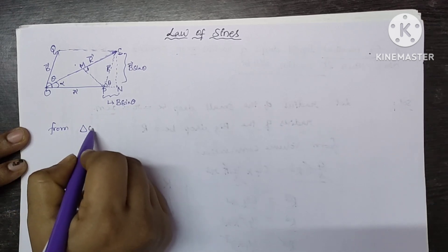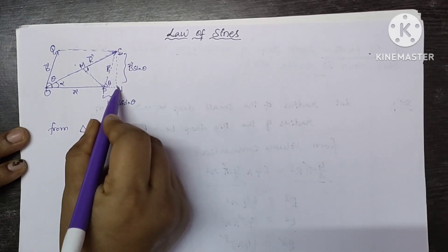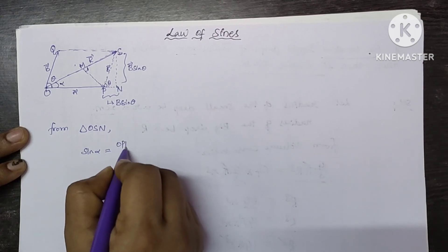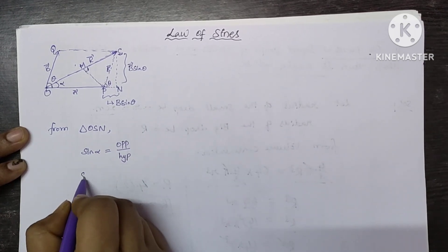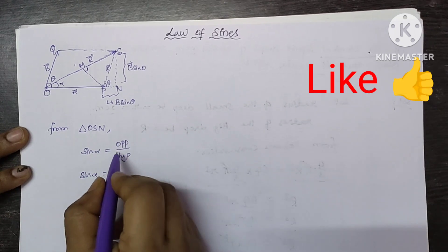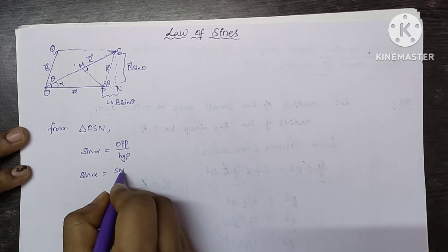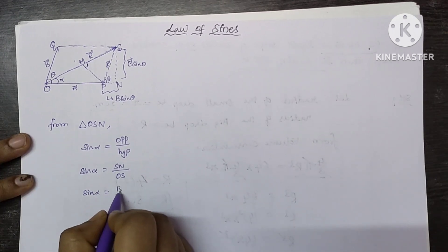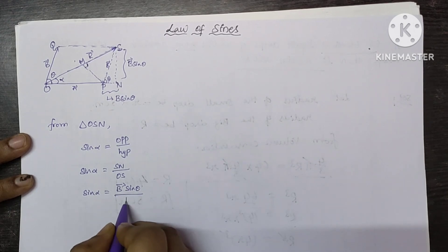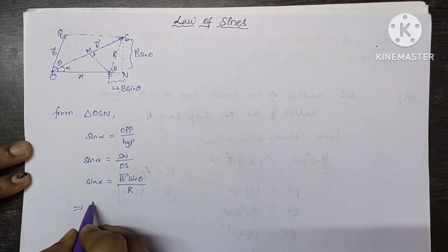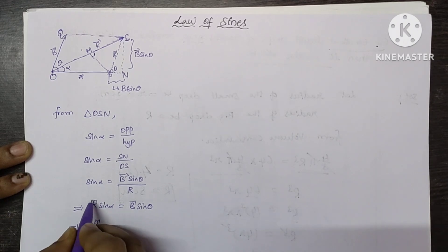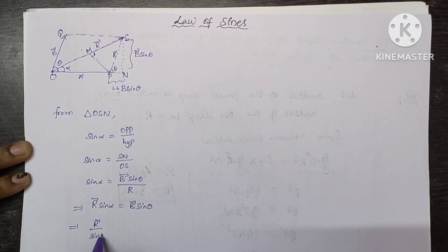From triangle OSN, sin alpha is equal to — we know from trigonometry that sine equals opposite side by hypotenuse. So sin alpha equals SN divided by OS. That implies R̄ upon sin θ is equal to P by sin α. Let this be equation number 1.